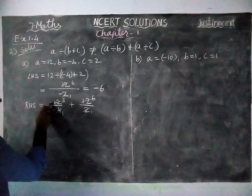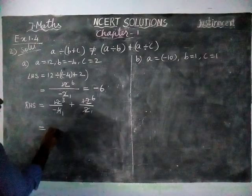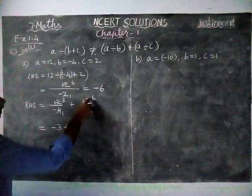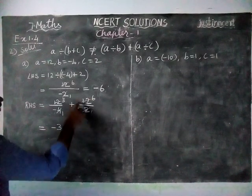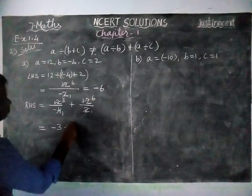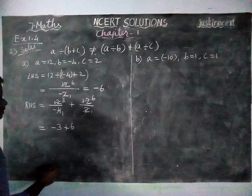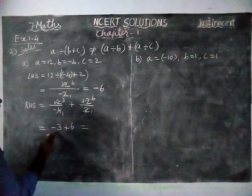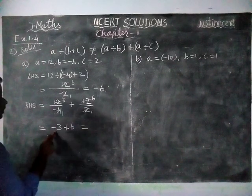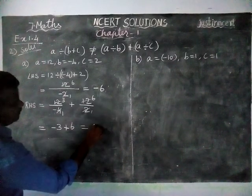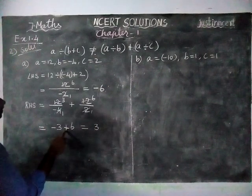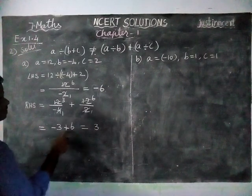Here signs are different, so minus 3. And here same sign, so plus 6 is the answer. Signs are different, we find the difference: difference is 3, greater number is 6, in front of 6 a plus sign is there, so plus 3.